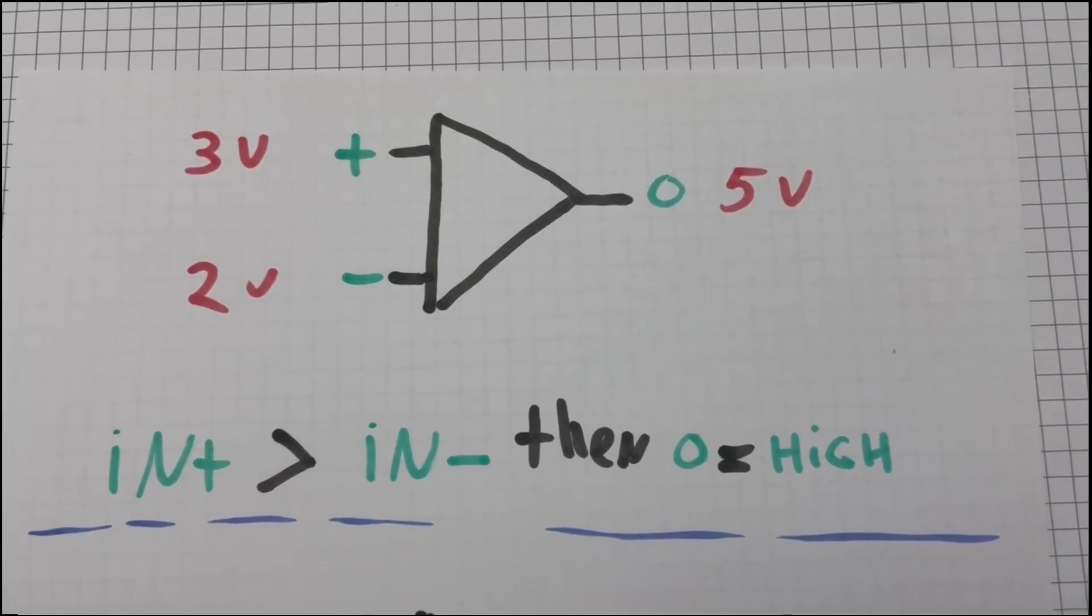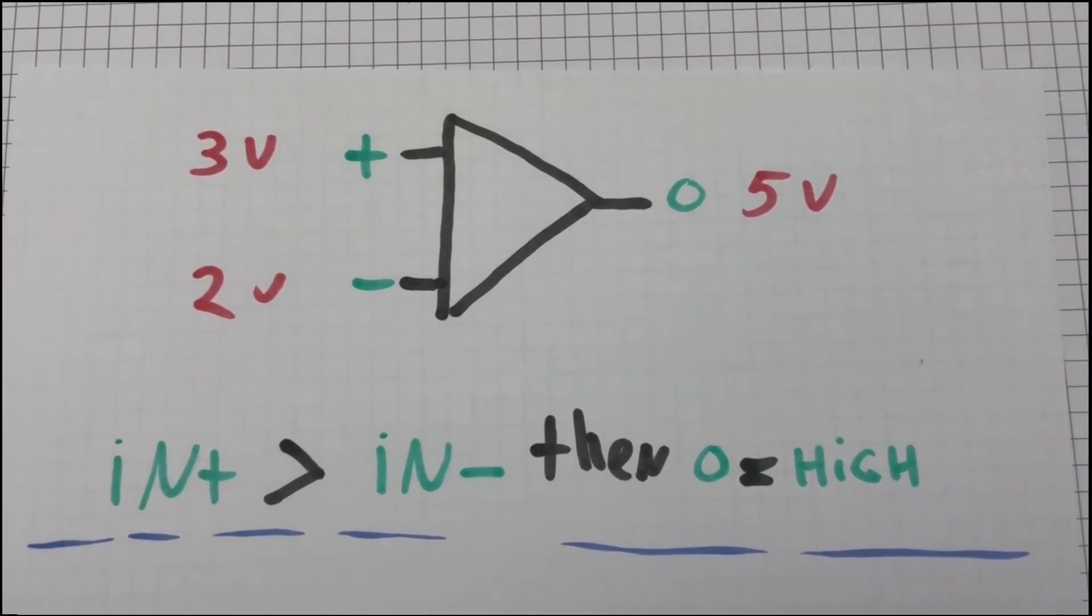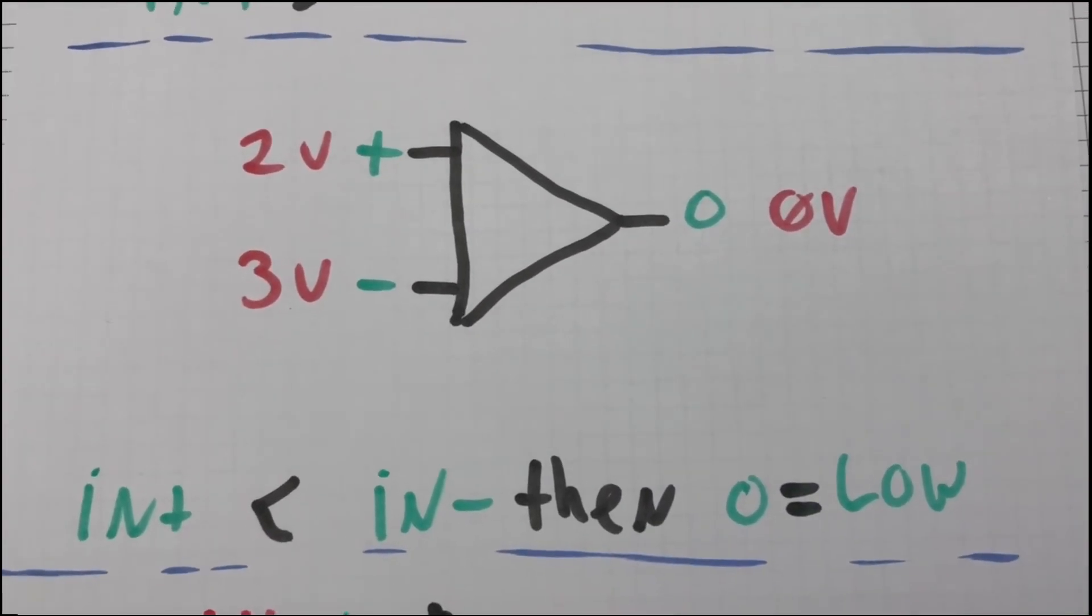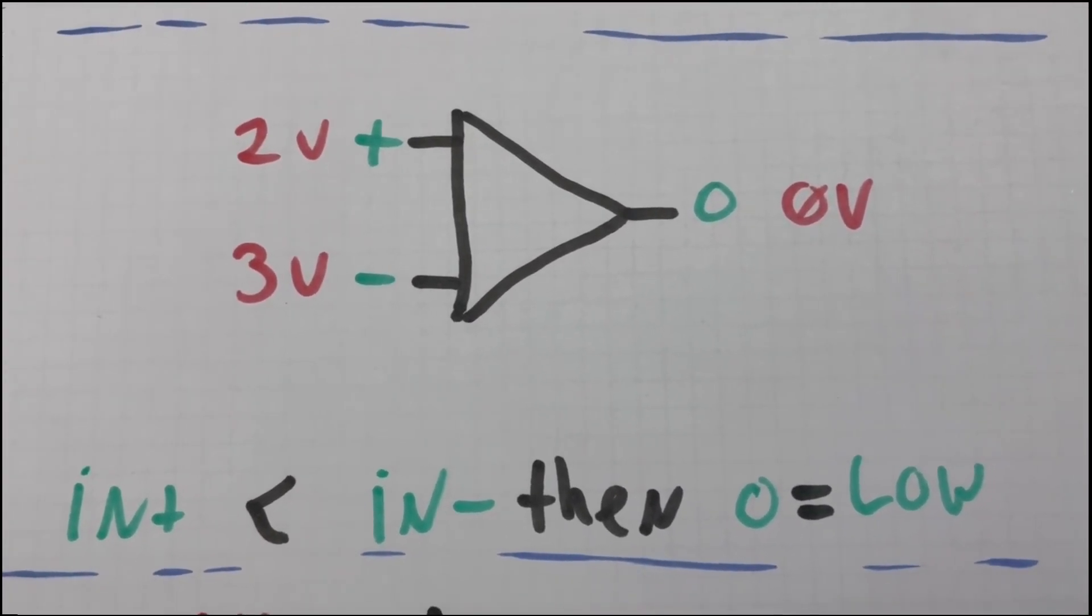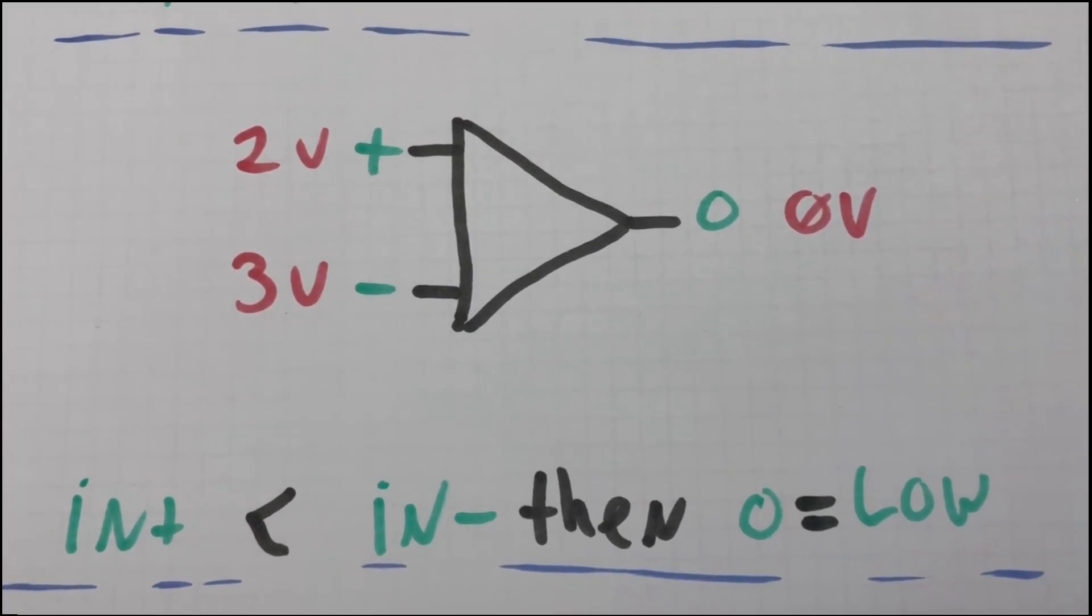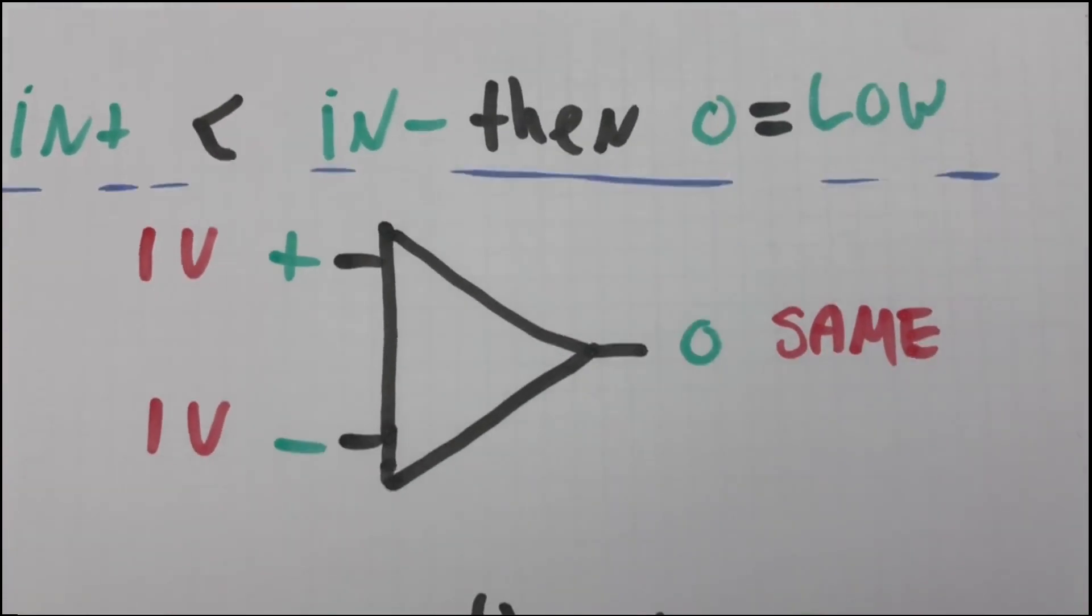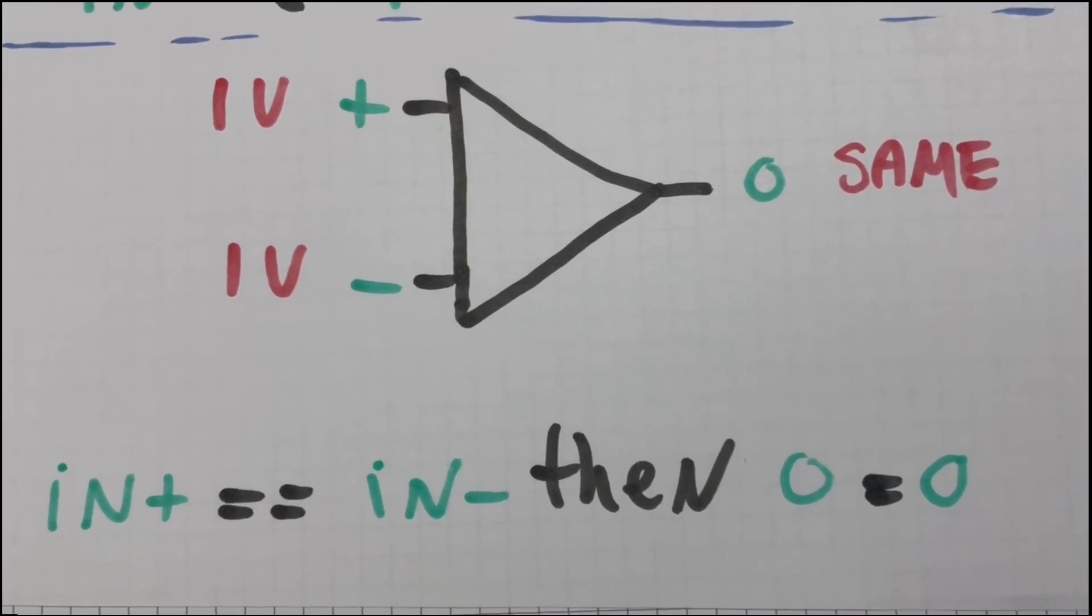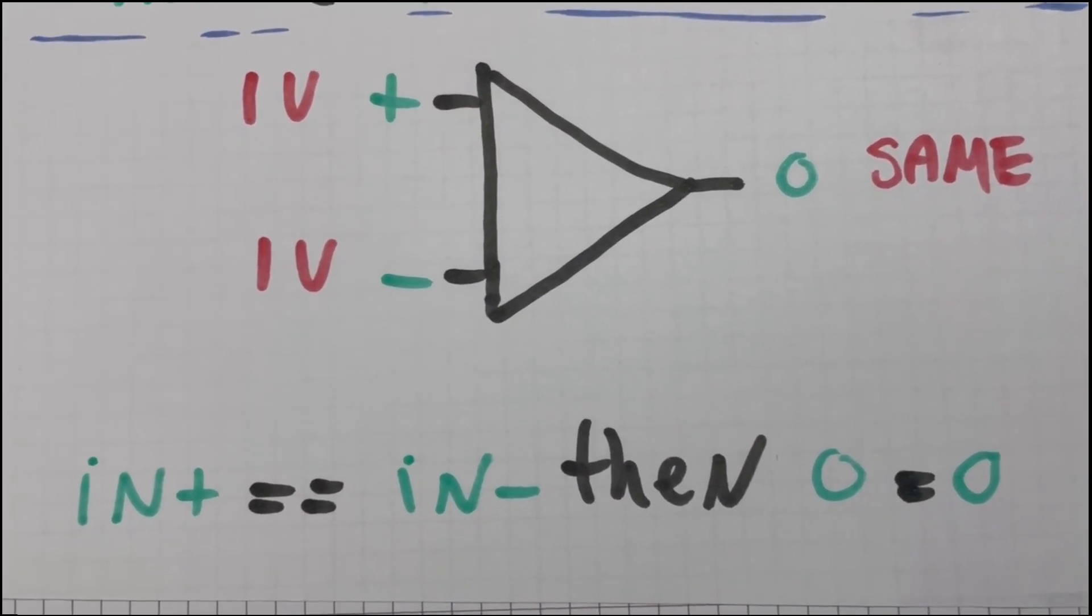When the voltage on the positive input is higher than the voltage on the negative input, the output goes high. When the voltage on the positive input is lower than the voltage on the negative input, the output goes low. When the voltage on the positive input is equal to the voltage on the negative input, the output remains the same.